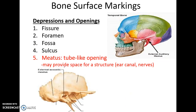A meatus is a tube-like opening that often ends in a wall, so it does not go all the way through. An example would be the external auditory meatus, or ear canal.